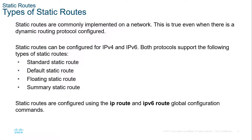Static routes are basically used for implementation on a small network. This is true even if there are dynamic routing protocols already there. We can do static routes for both IPv4 and IPv6. The four main types are standard, default, floating, and summary static routes. We create them using the IP route command for IPv4, or IPv6 route from the global configuration command.